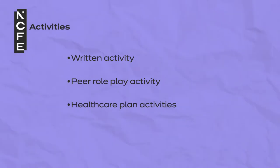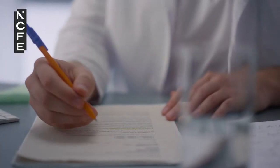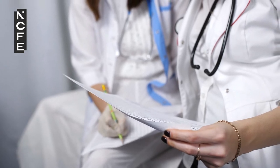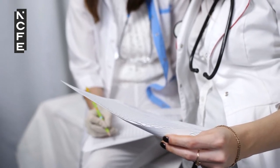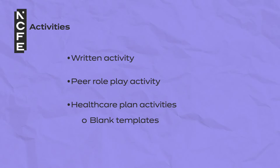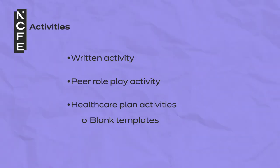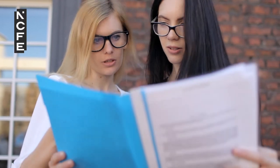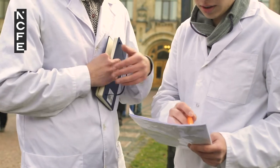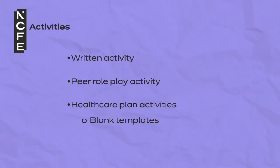One example of the healthcare plan activity is where students are provided with examples of different types of healthcare plans that are completed. Students are then asked to highlight key parts of the healthcare plan that demonstrate person centred skills. Another suggested activity is where students complete blank templates of different types of healthcare plans based on case study information, then peer review each other's healthcare plan and provide feedback. The tutor should also provide additional feedback.